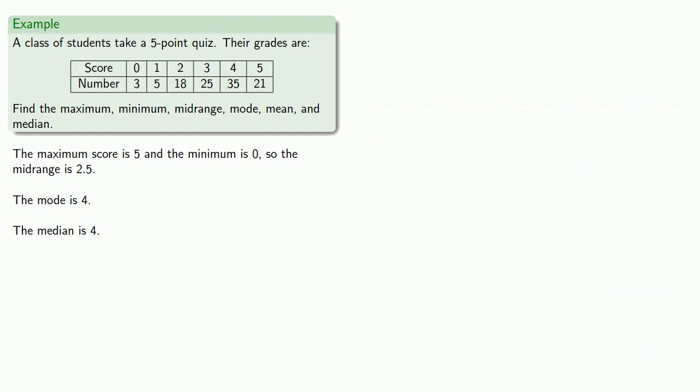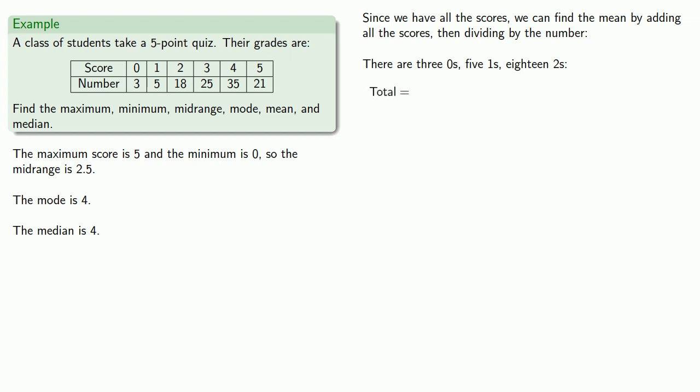How about the mean? Since we have all the scores, we can find the mean by adding all the scores together, and then dividing by the number of scores. There are three zeros, five ones, eighteen twos. Three zeros, five ones, that's a lot of twos. Maybe there's an easier way of doing this.